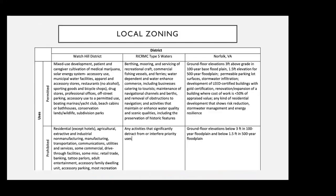For this project, I dived into local zoning to see what is and is not permitted in the Watch Hill district. I also looked at water types — Type 5 waters are commercial and recreational harbors, which is what the Watch Hill Bay area is. I also looked at Norfolk, Virginia, which is a pioneer in coastal resilience zoning. They implemented a new zoning ordinance in reaction to coastal flooding, with the goal of enhancing flood resistance and directing new development to higher ground.